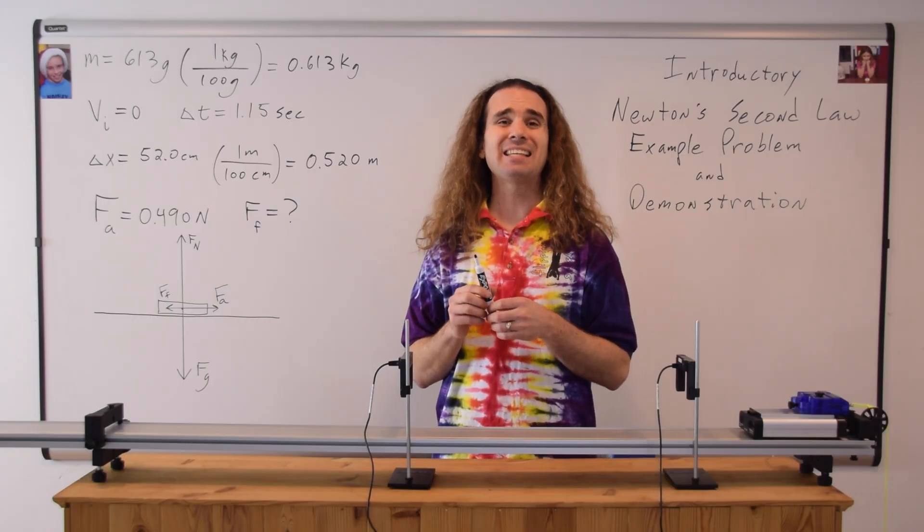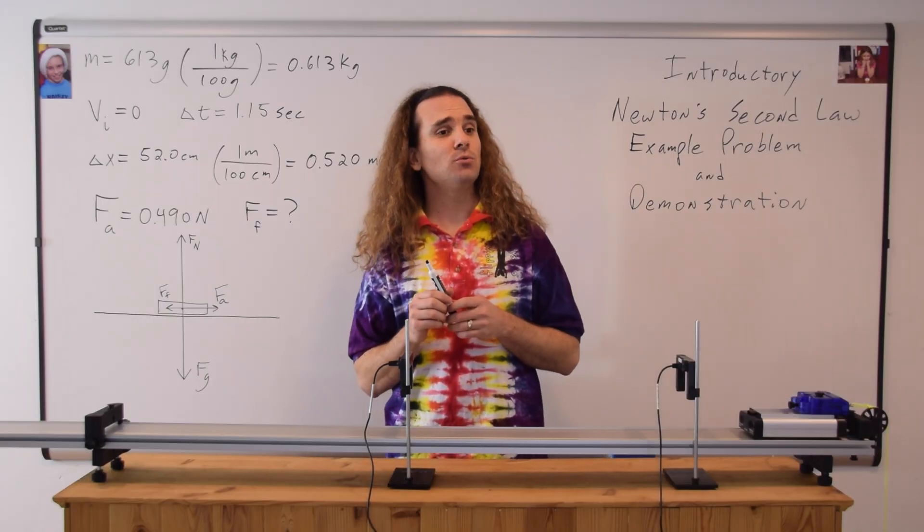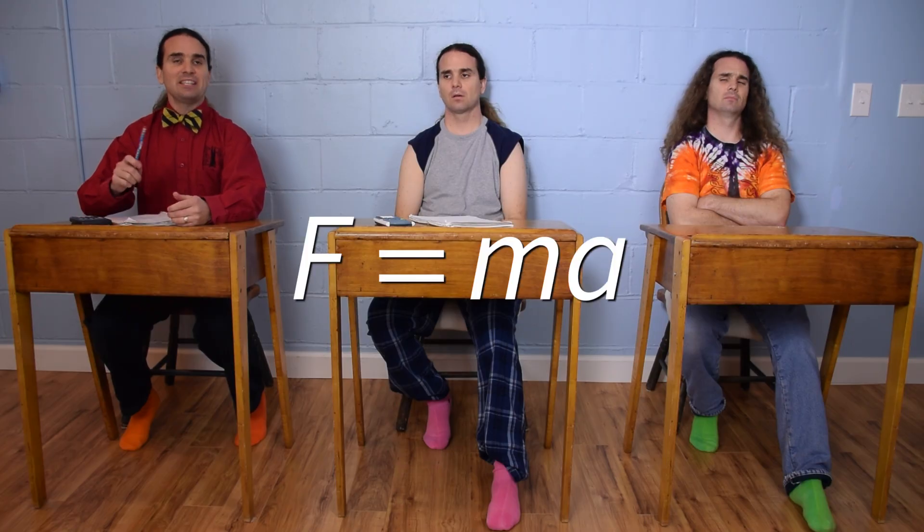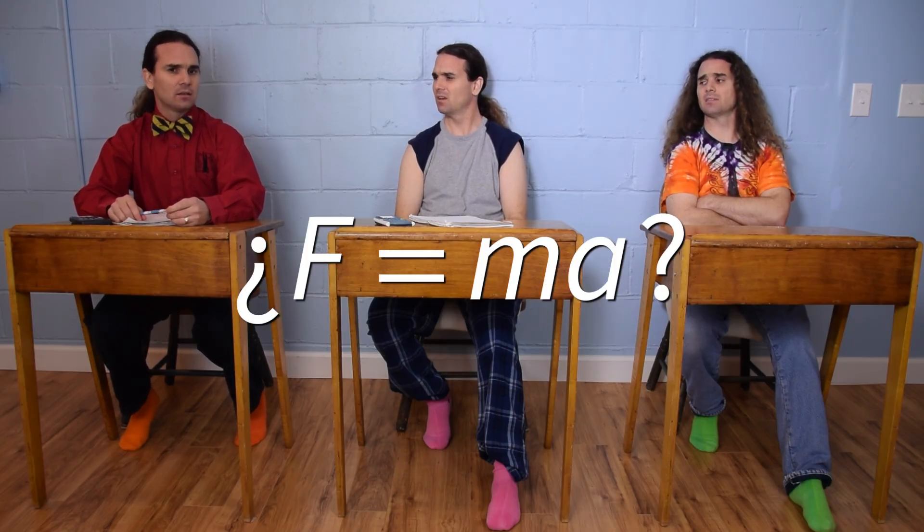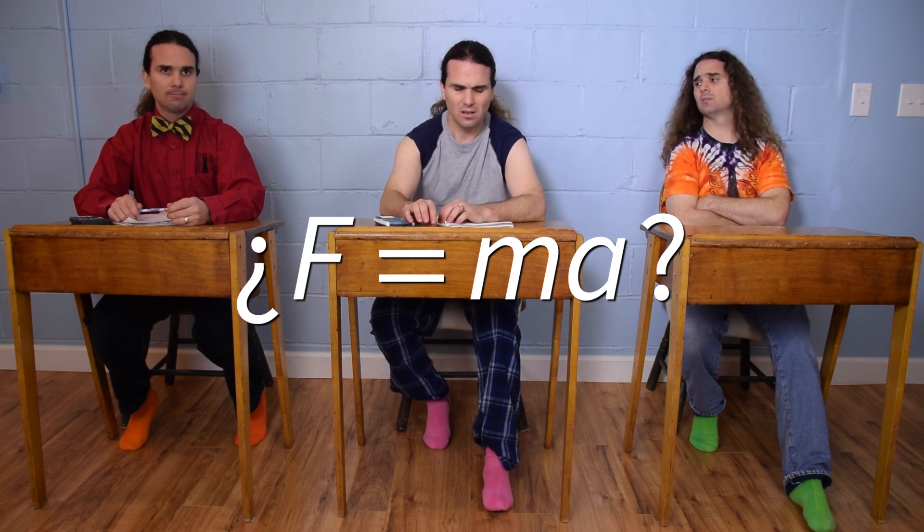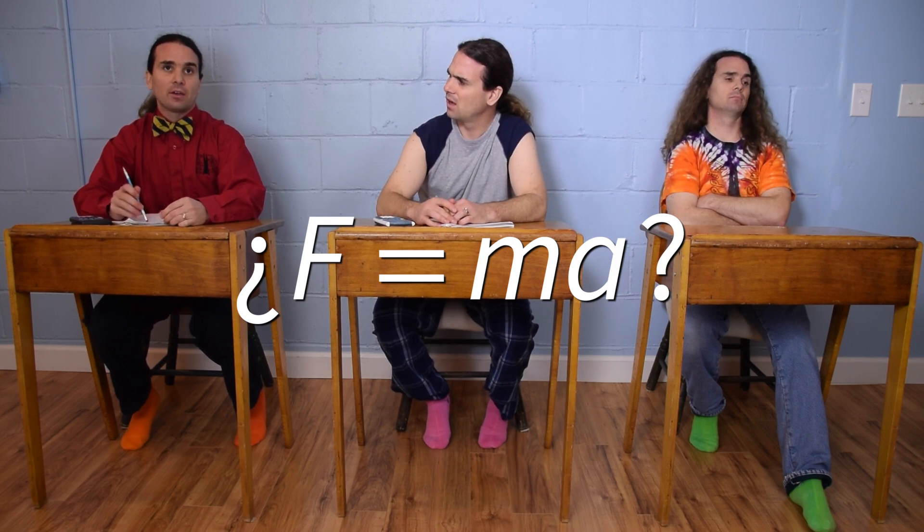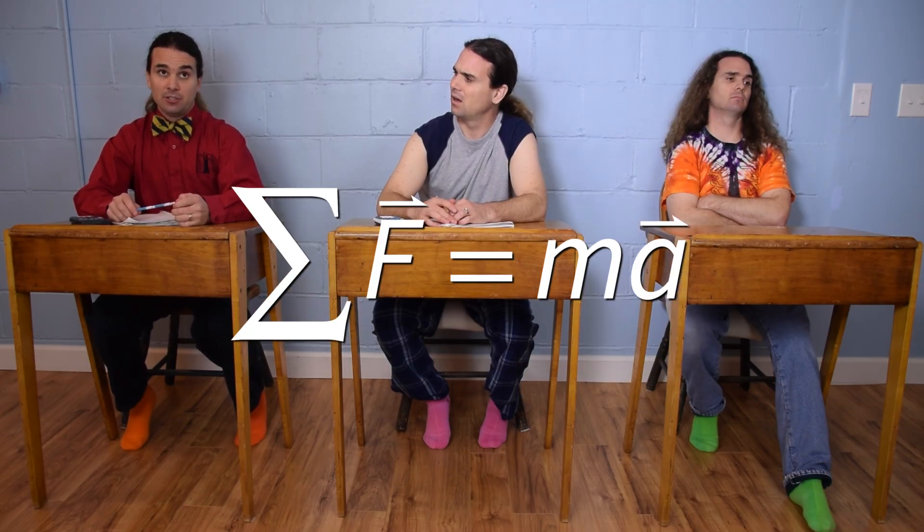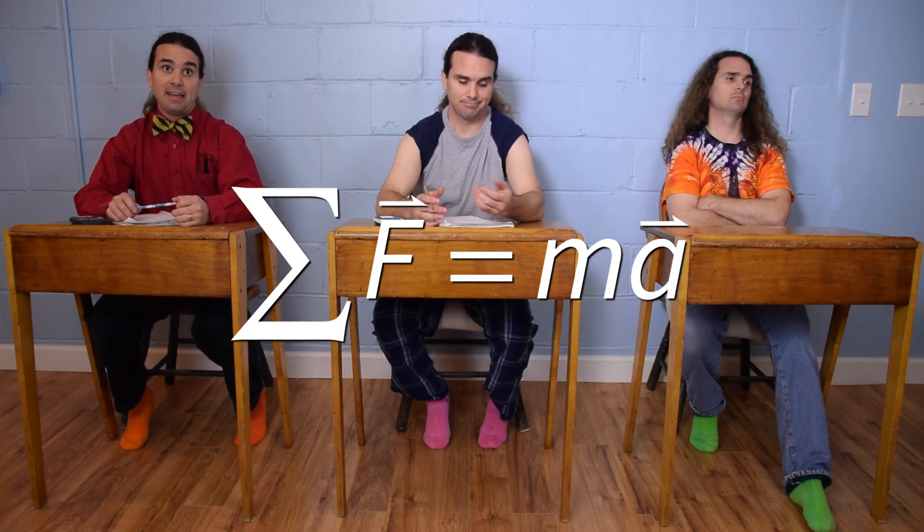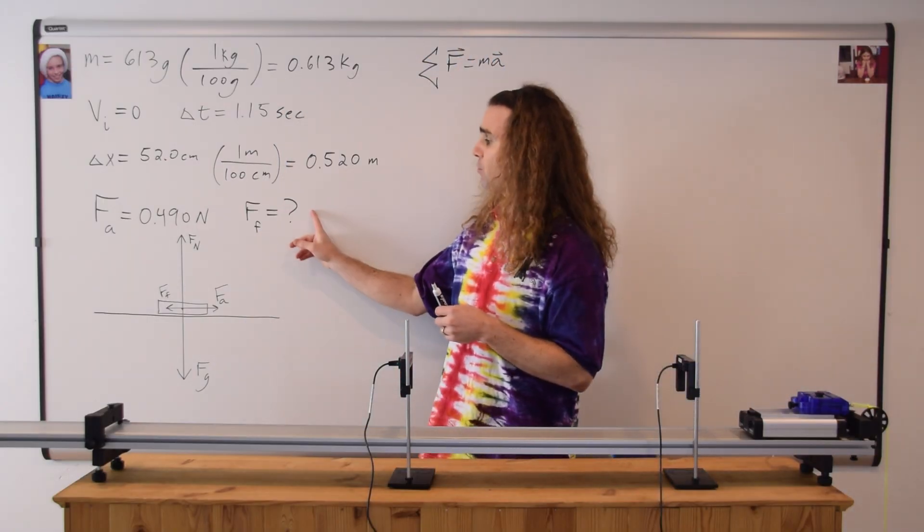Now we can use Newton's second law to solve for the force of friction. Billy, what is Newton's second law? Force equals mass times acceleration. Really, Billy? You forgot vectors, and that it's the net force. Are you feeling okay? Yeah. Okay. Newton's second law is net force equals mass times acceleration, where both force and acceleration are vectors.